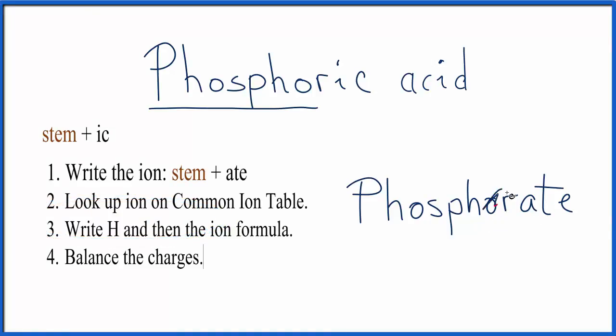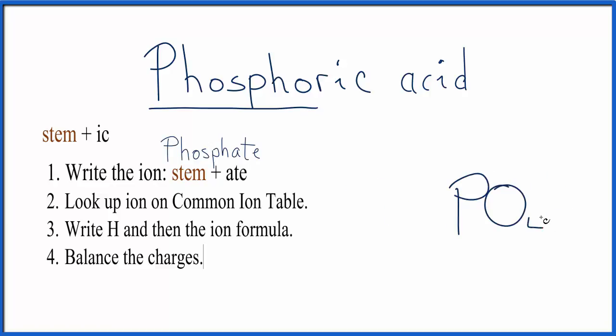We see that it's the phosphate, not the phosphorate ion. That's good to know. So we have our PO4 3-, the phosphate ion, and then we're going to write H in front of this.